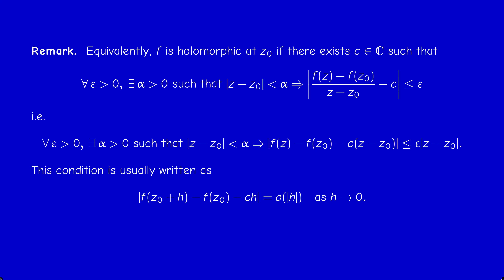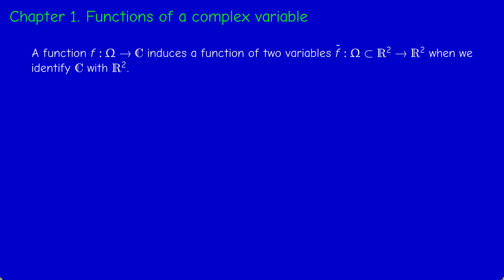Since we can identify C with R², the function f from Ω to C gives rise to a function of two real variables taking values in R², which we call a vector field — a function of two variables having two components, since every complex number is a couple. We identify f with this function of two variables, denoted f̃. For example, if f(z) = z², we write z = x + iy and expand: the real part is x² − y² (this is u) and the imaginary part is 2xy (this is v).